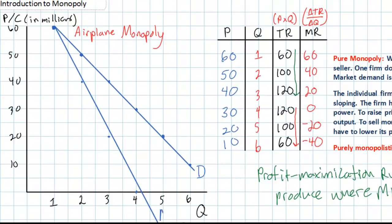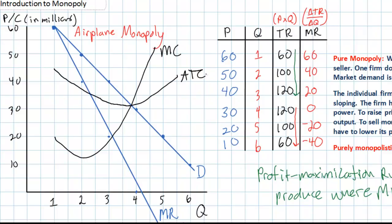Now we have half of what we need to determine the profit-maximizing quantity. All we must do is add cost curves to this graph. A firm in pure monopoly faces the same sorts of costs as a firm in perfect competition: marginal cost, average total cost, and average variable cost. For our purposes we only need to draw the marginal cost and average total cost curves, since that is all we need to determine whether the monopolist will earn economic profits, losses, or break even. Note that marginal cost intersects ATC at its lowest point, just as in perfect competition.